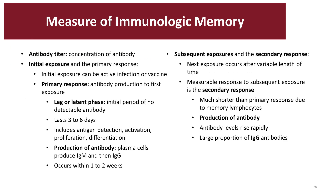Antibody titer is a measurement of immunological memory. The primary response is the measurable response of antibody production to the first exposure of an antigen. There is a lag or latent phase — an initial period of no detectable antibody that lasts about three to six days, sometimes even up to a week. This includes the activation, detection, proliferation, and differentiation of an antigen. Production of antibodies usually starts within one to two weeks.